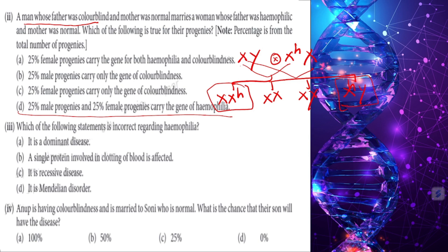Which of the following statement is incorrect regarding hemophilia? Is it a dominant disease? The first option is wrong — hemophilia is not a dominant disease. It is a sex-linked, Mendelian recessive disorder.